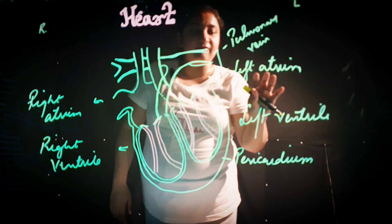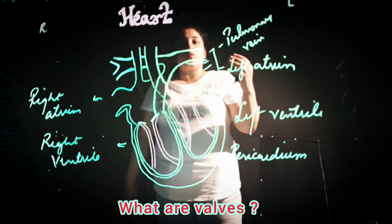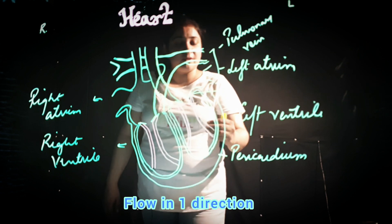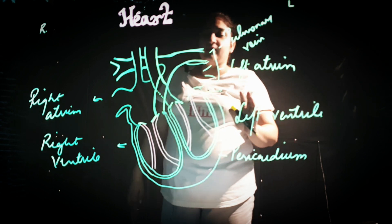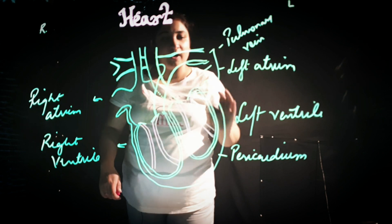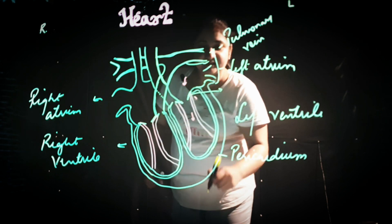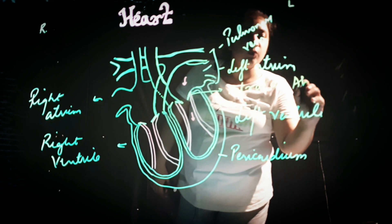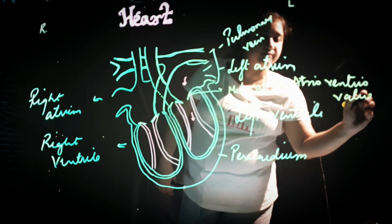Then blood flows from the left atrium to the left ventricle with the help of valves. Valves are tissues which help blood flow in only one direction. No backward flow of blood from the ventricles to the atrium is allowed, as it can lead to fatal conditions. Blood flows in one direction — from the atrium to the ventricle — through what is called the mitral valve, also known as the atrioventricular valve.